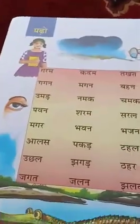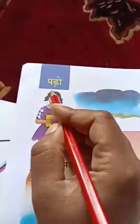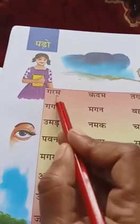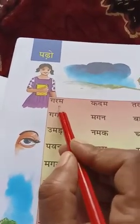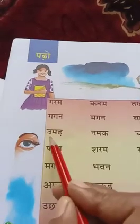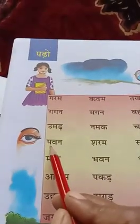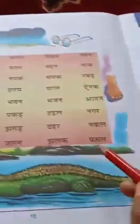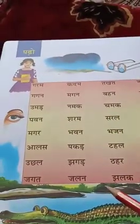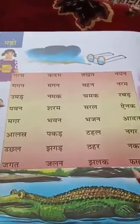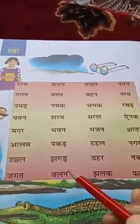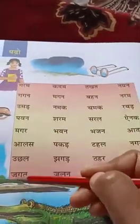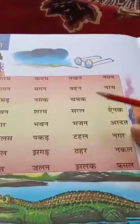Next, go to the padow section. This is also a reading activity. Words include: garam, gagan, umana, pavan, magara. Read all words loudly from beginning to ending, a minimum of two times. Then write properly in your three-line notes, making two or three columns, and write all the words one by one. Read and write.